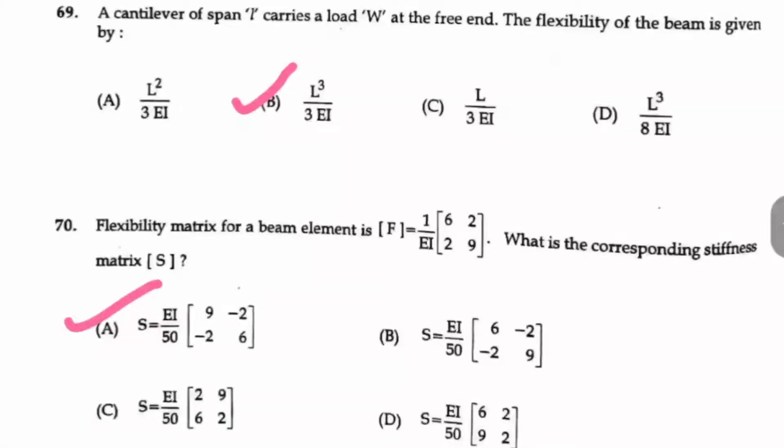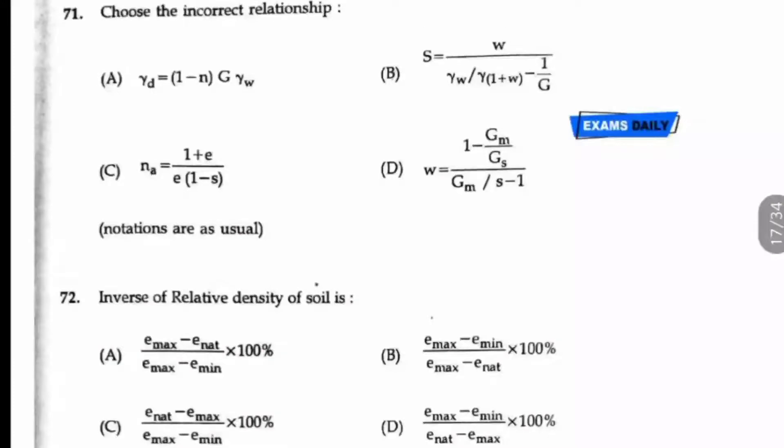Question number 71: Choose the incorrect relationship. We have already studied the relations between these properties in the soil mechanics subject. If you see the four relations, here the B option and C option both are actually wrong, so you can write any of the answer B or C.